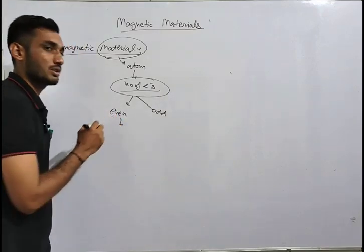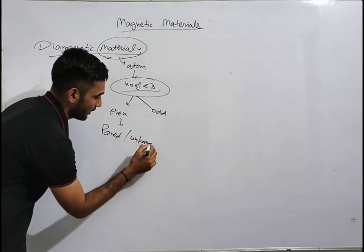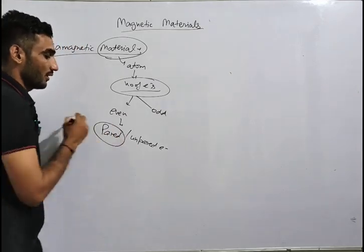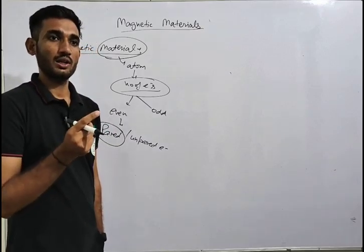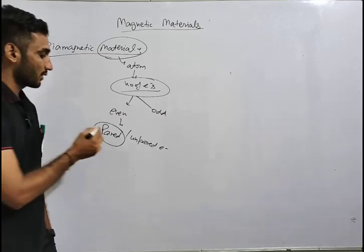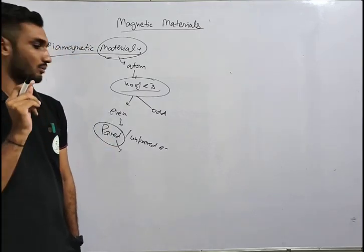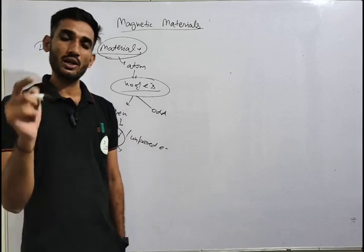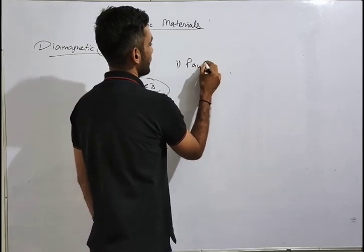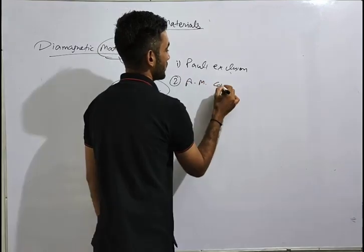In the even category, we can further divide it into two categories: paired and unpaired electrons. Paired means two electrons in the same orbit — if one electron moves clockwise, the second electron moves anticlockwise. Two laws are applicable here: first is the Pauli exclusion principle, and second is angular momentum conservation.